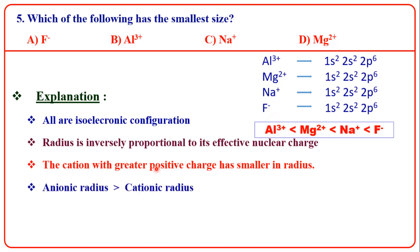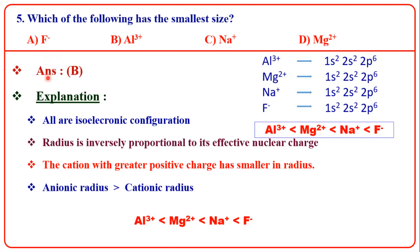Already we know anionic radius is larger than cationic radius. So the combined order is Al³⁺ smallest, then Mg²⁺, then Na⁺, and S⁻ is largest. The answer: Al³⁺ is smallest.